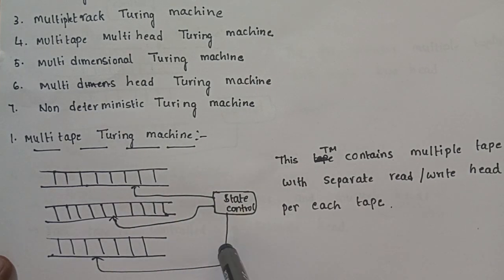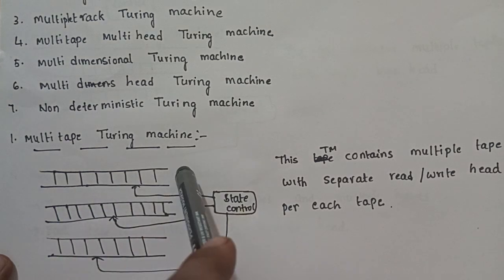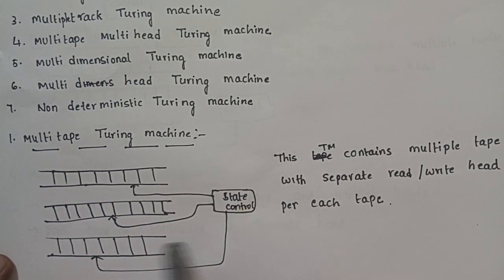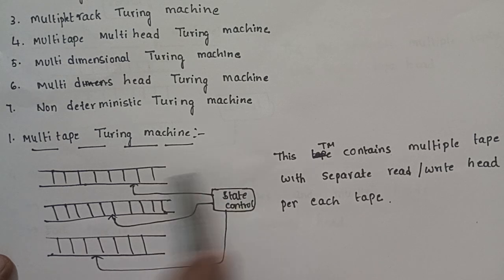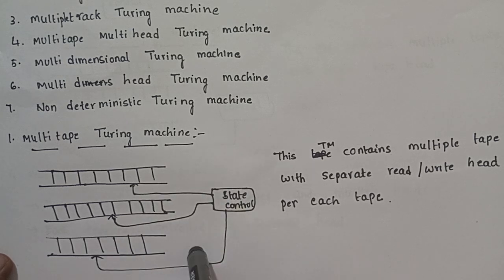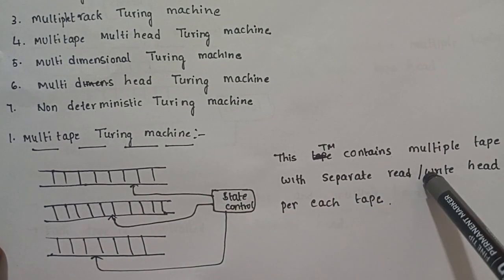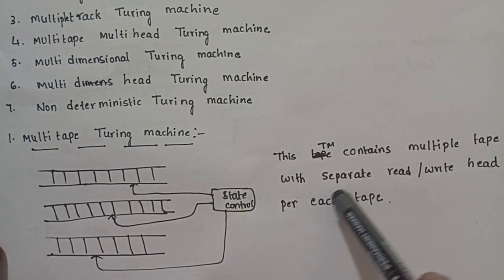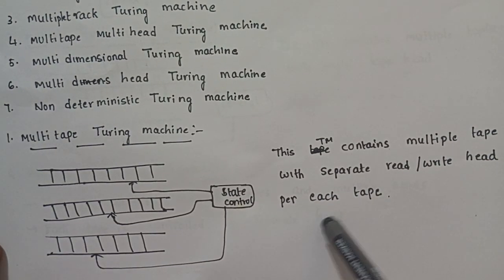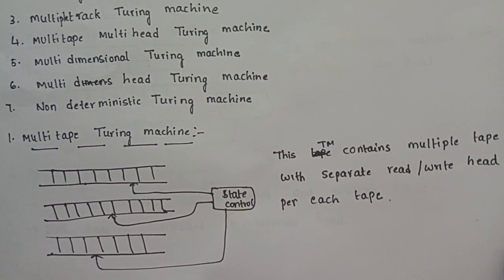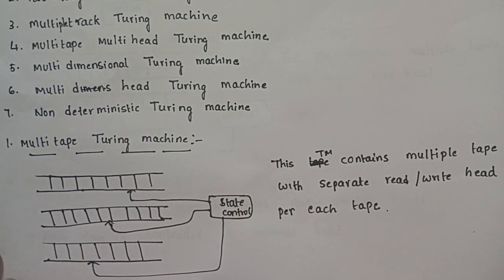This type of Turing Machine is the Multi-Tape Turing Machine. There are multiple tapes, and each tape has separate tape heads. This Turing Machine contains multiple tapes with separate read-write heads for each tape.